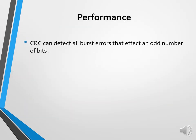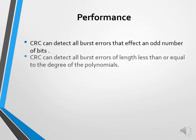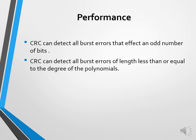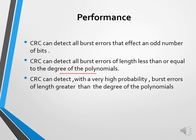CRC can detect all burst errors that affect an odd number of bits. CRC can detect all burst errors of length less than or equal to the degree of the polynomial. CRC can detect with very high probability burst errors of length greater than the degree of the polynomial.